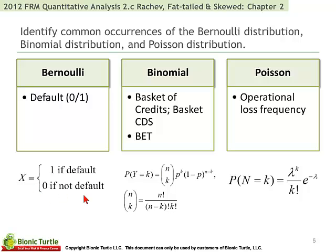Now, if we have a series of Bernoullis, then we have a binomial — if they are independent. You probably are familiar with, or at least recognize, this as a probability mass function since the variable is discrete. The probability that y equals k under a binomial is given by this formula here. We would use the binomial to estimate probabilities of numbers of defaults in a basket of credit or a basket of credit default swaps. Keep in mind, though, it assumes IID — it assumes independence between the events.